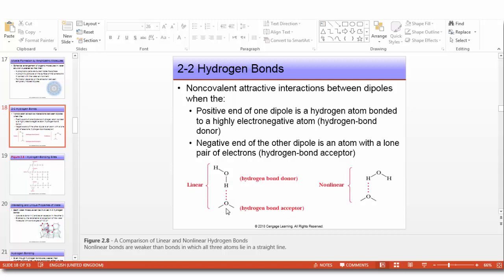Nonlinear bonds are weaker than bonds in which all three atoms lie in a straight line. This nonlinear hydrogen bond is weaker than the linear bond where the three atoms lie in a straight line.